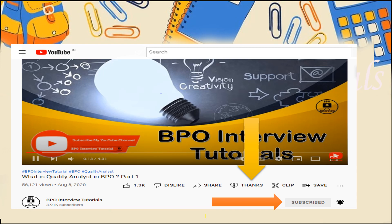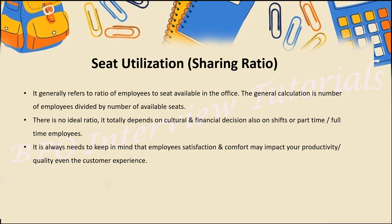Let's start today's topic: seat utilization. Basically, for example, I'm working with a company where we have 100 employees and 100 seats available. Now employees doesn't mean only agents working at ground level — it may include team leaders, trainers, quality analysts, and support staff. Everyone comes under the employees.